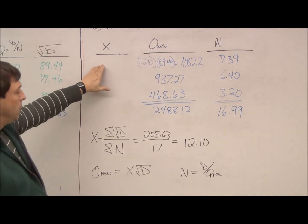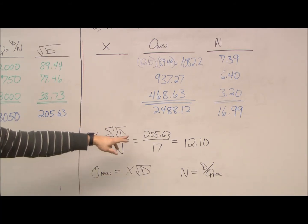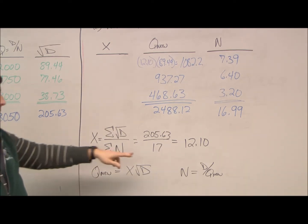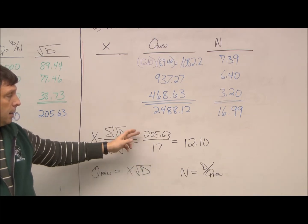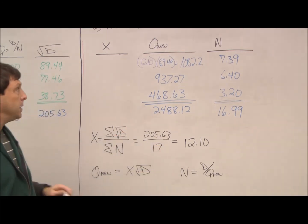The first thing we have to do is figure out X. X is the summation of our square root of D, which we just figured out is 205.63, over the summation of N, which is the number of orders per year. That summation is 17. So, 205 divided by 17 is 12.1.